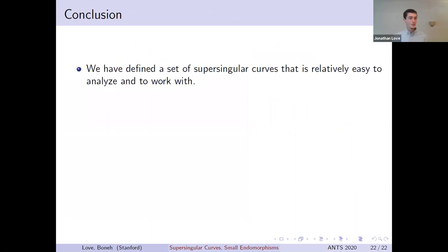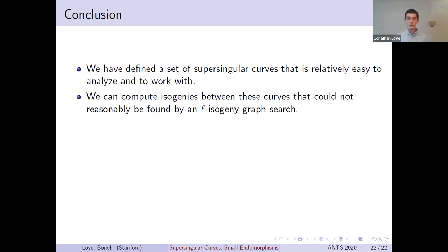To wrap up, we've seen that the set of m-small curves is a set of supersingular curves that is comparatively straightforward to analyze and to work with. We also have techniques for studying isogenies between them, including very large degree isogenies that could not be reasonably found by taking walks on L-isogeny graphs. Whether these techniques may be modified to apply to other sets of curves as well has yet to be seen and may be a topic for further exploration.